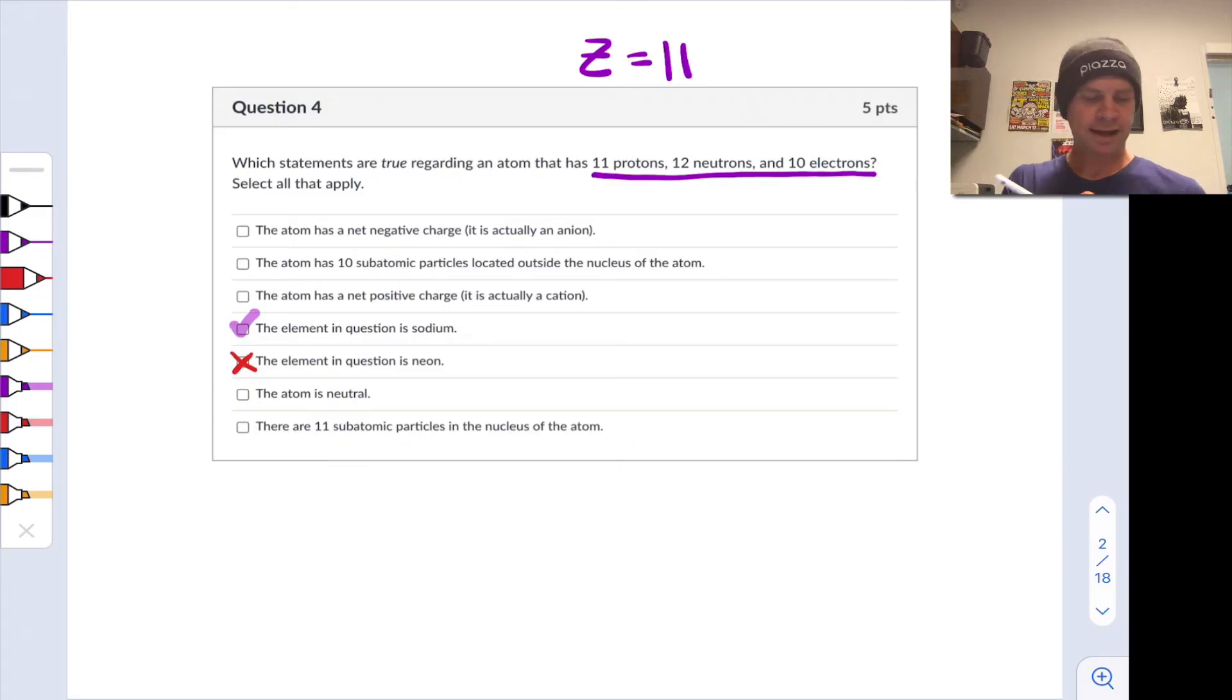If we look at the number of protons versus the number of electrons, protons are positively charged subatomic particles, electrons are negatively charged, and so we have an excess of positive charge in this cation. It's got a positive charge overall. It is actually a cation, so this is a true statement. The atom has a net positive charge, and naturally it cannot possibly be neutral and cannot possibly have a negative charge, so we can rule those out immediately.